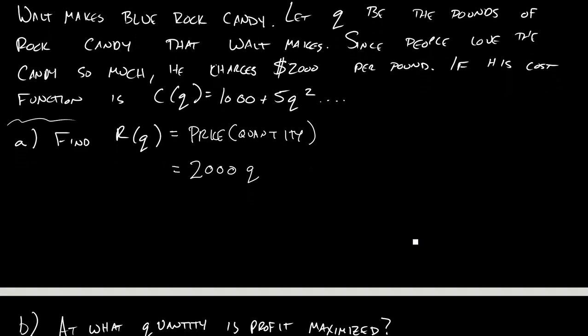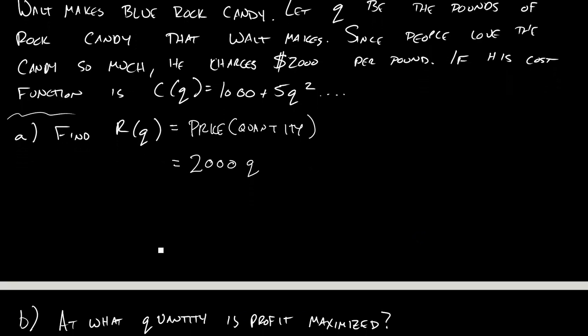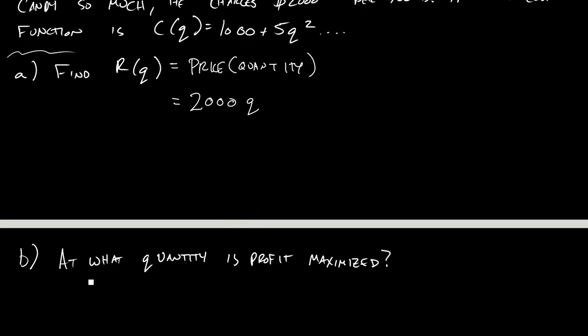Now, the main idea of this section is going to be something like part B. So it'll ask, at what quantity is profit maximized? And that's where we start with our two big ideas from above. So specifically, we'd have something like profit is equal to revenue minus cost. And now we want this equation on the right side. We want to be able to write it just in terms of one variable. And part A kind of helped us with that, right? Because revenue was 2,000Q. And cost, make sure you put in parentheses, is 1,000 plus 5Q squared.